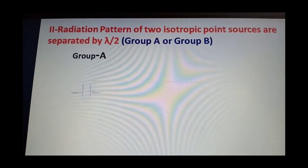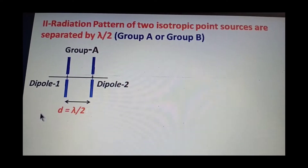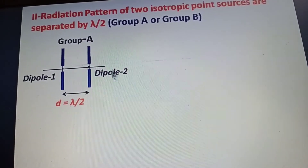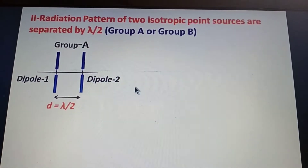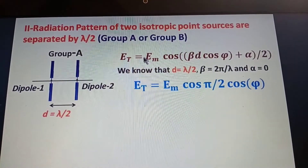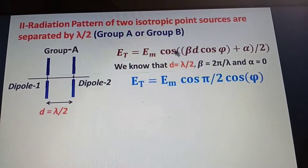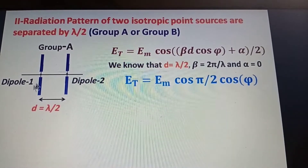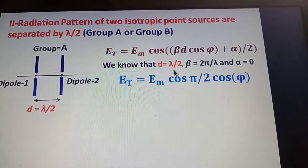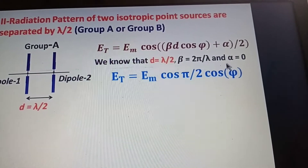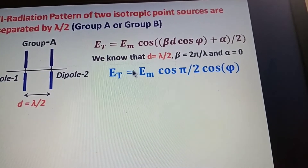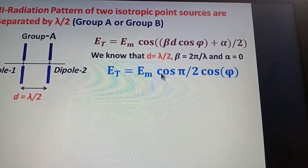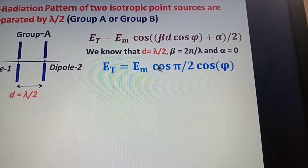Consider group A, which has two dipoles separated by lambda by two. The radiation pattern of this group is called the individual pattern or element pattern. Using the general equation derived earlier, the total electric field is E_m times cos((beta * d * cos(phi) + alpha) / 2). Substituting d = lambda/2, beta = 2*pi/lambda, and alpha = 0, the simplified result is E_t = E_m * cos(pi/2 * cos(phi)). We now find the maxima and minima of this expression.